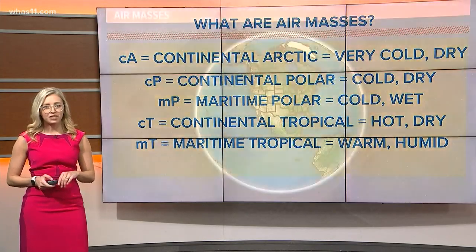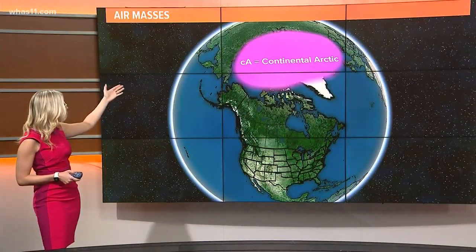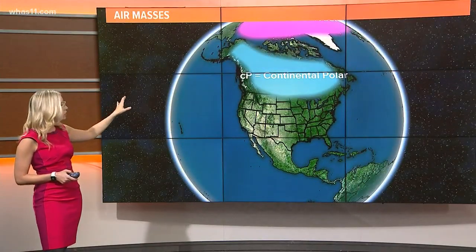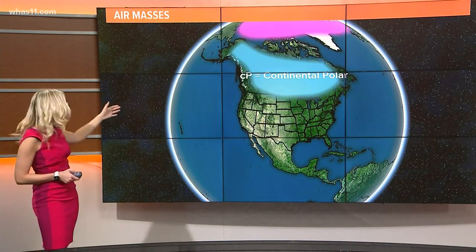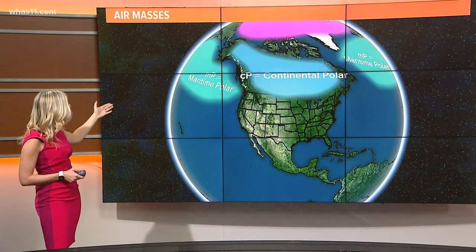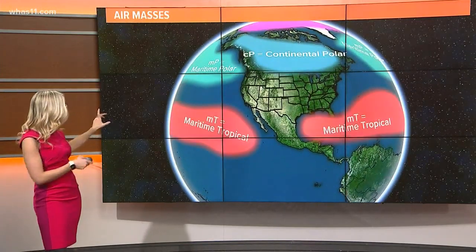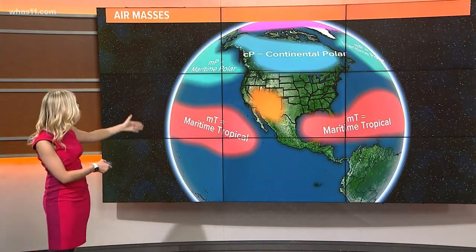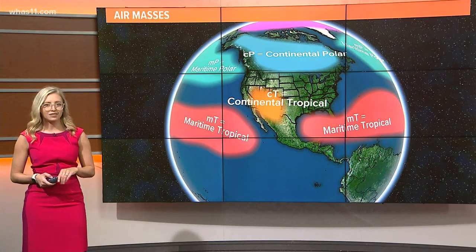Now let's map these out, taking a look at our globe here. cA continental arctic forms way up towards the poles. cP continental polar is usually placed somewhere around Canada or up towards Greenland. mP maritime polar is over the chilly parts of the ocean, a little further south. mT maritime tropical is where ocean waters are warmer, and cT continental tropical is a warm air mass over land.